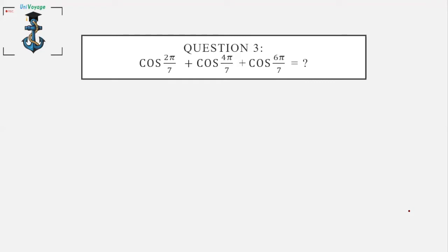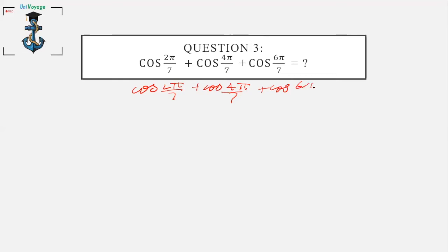Question 3 says: find the value of cos(2π/7) + cos(4π/7) + cos(6π/7). What I will do is multiply the whole term by 2sin(π/7) and divide by the same term, so ultimately it remains 1.